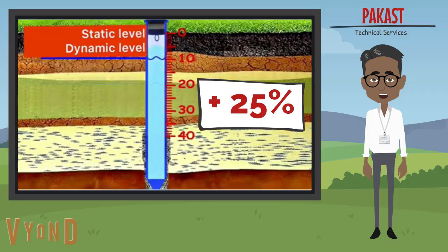If the static level was equal to 15 m, then we remove the atmospheric pressure, which is equal to 10 m of water column. Then the static level rises to 5 m, and the dynamic level also rises by 10 m.